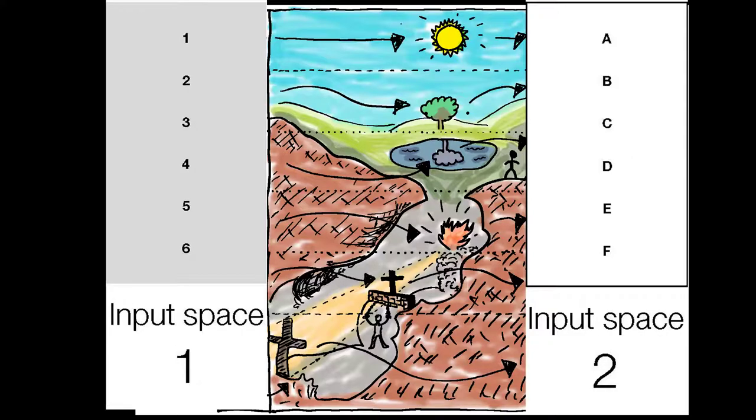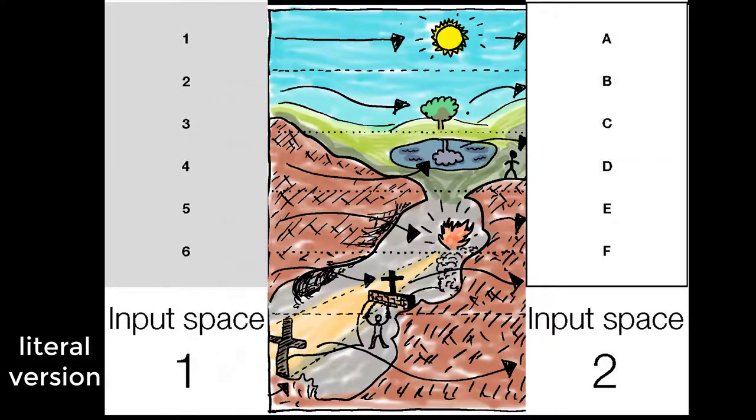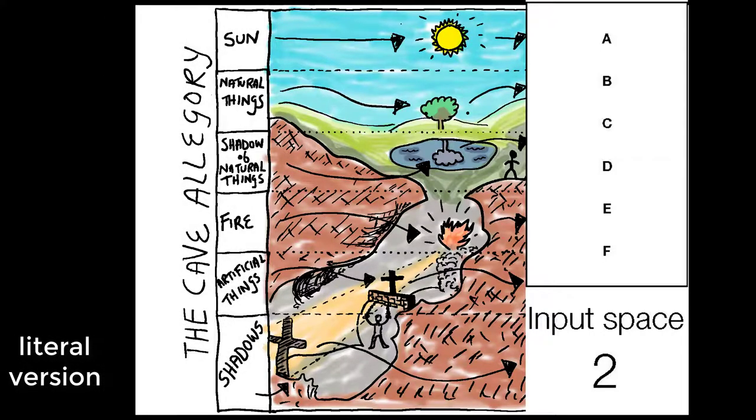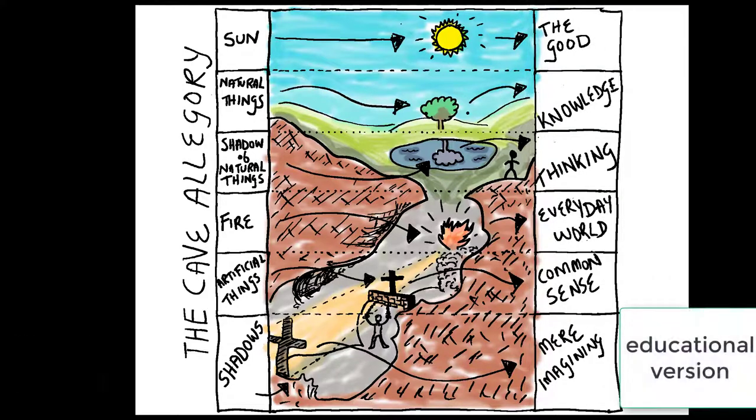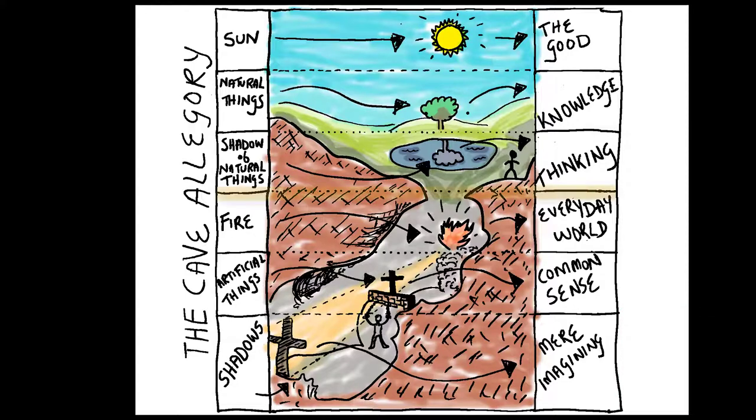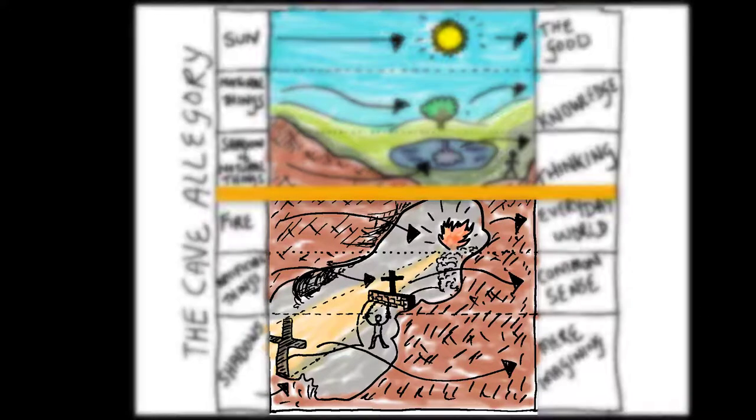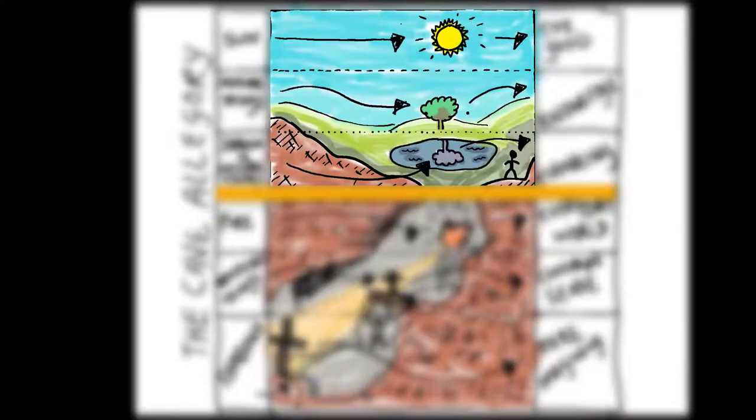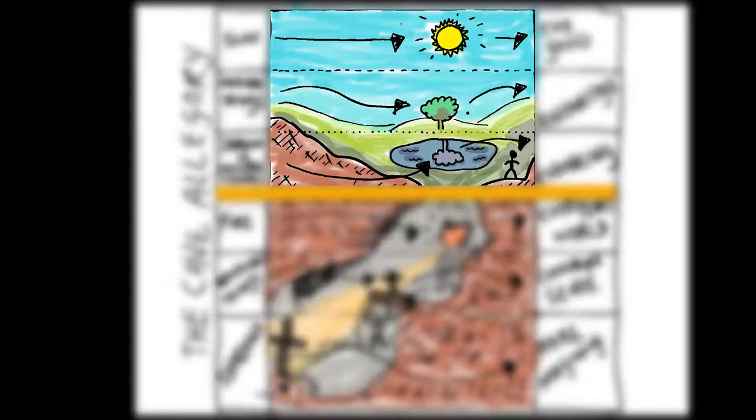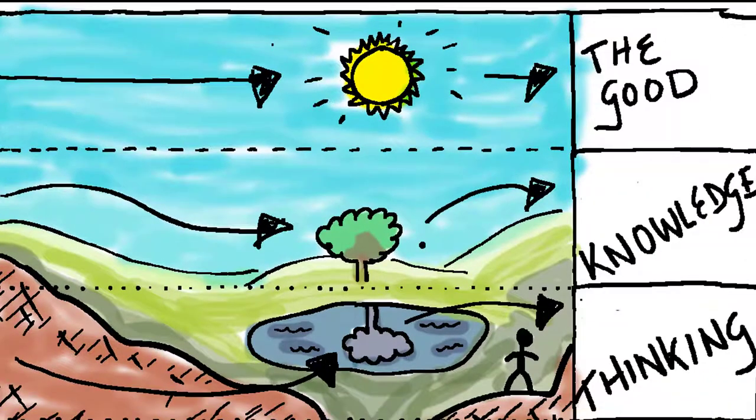For Plato there's a first input space which is a literal version of what's going on, but then there's also a second input space which gives us a more abstract educational account. There we've got a division between the everyday world of the cave and shadows and fire, and we've got a far more abstract world beyond that—a world which gives us a far more realistic account of how the world works. That comes through the nature of deep principles of the good and the knowledge we have of the world.